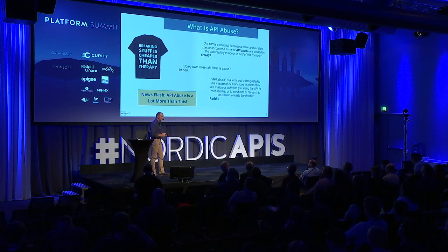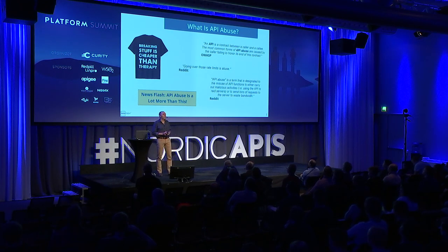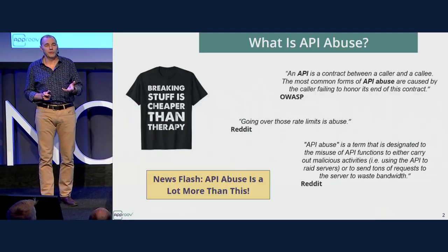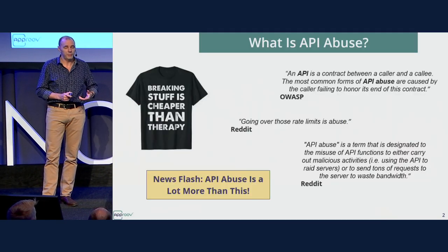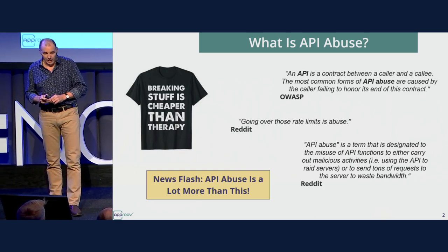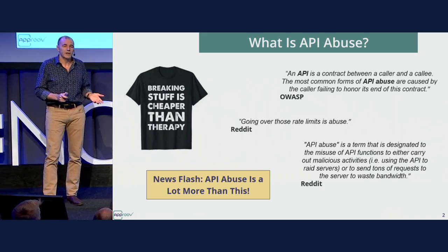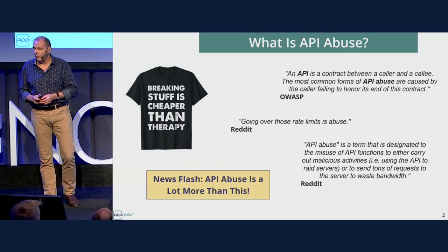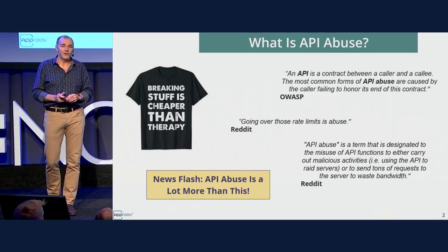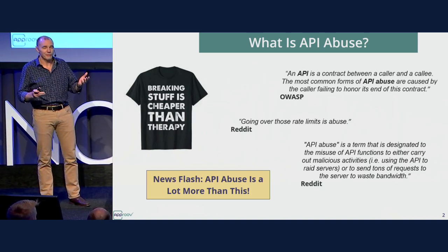So first of all, what is API abuse exactly? There's an OWASP definition which is not bad — it suggests that it's all to do with the caller: what the caller does, how they approach the API, how they try and use it, what's their intention. Which is reasonable. But then of course the real truth about anything is on Reddit, so I went and had a look there and found some quite interesting definitions of what API abuse is.